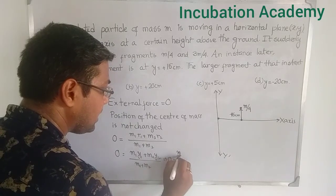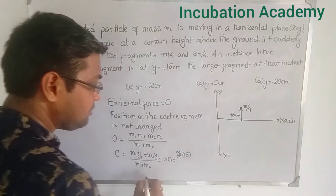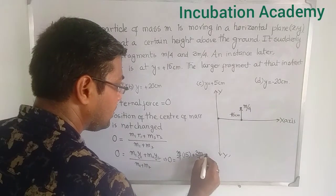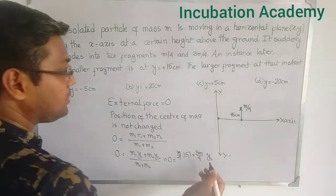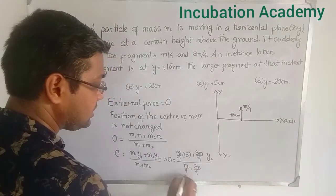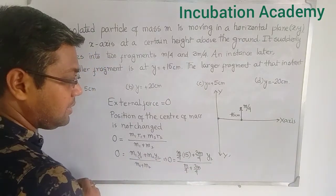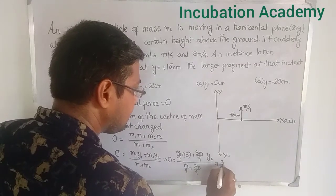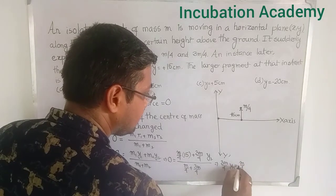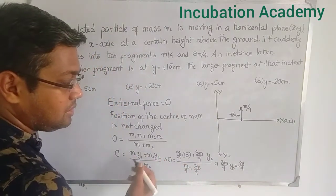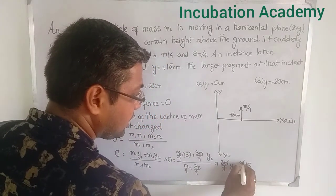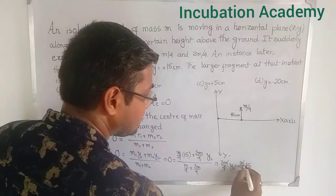So: m1 = m/4, y1 = 15, m2 = 3m/4, and y2 is what we need to find. Dividing by (m/4 + 3m/4), the total is m, which gives 0 on the left side. This simplifies to 3m/4 · y2 = −m/4 · 15. The 4s and m's cancel, so 3·y2 = −15, giving y2 = −5 centimeters.